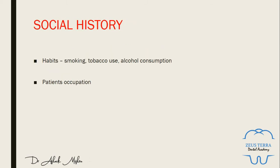Regarding social history, it should include details about habits — especially tobacco use (including smokeless tobacco), alcohol consumption, and smoking history. For current smokers, it is important to know whether they want to quit, whether they are interested in nicotine replacement therapy, and whether they are aware of the side effects of tobacco. The patient should be educated accordingly.